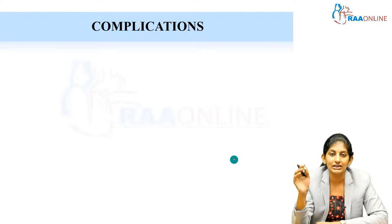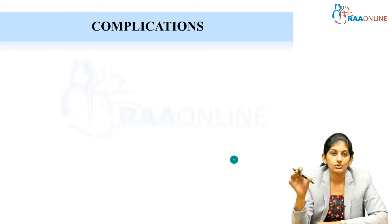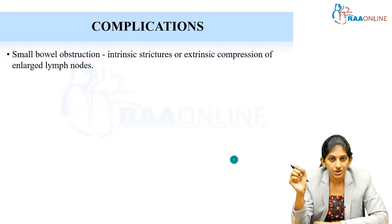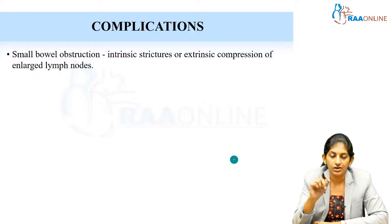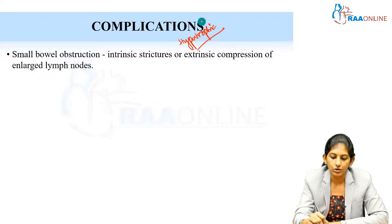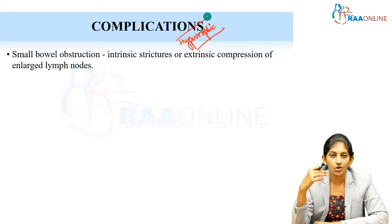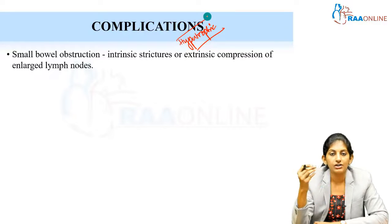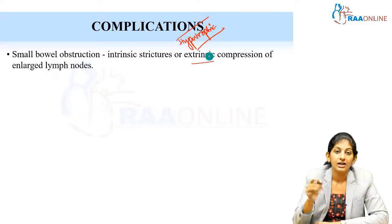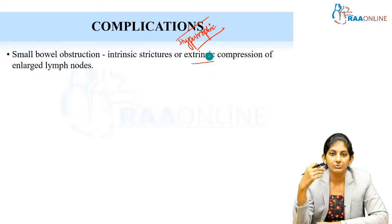Children can also present directly with intestinal obstruction or perforation. The first complication is intestinal obstruction, which can occur either because of strictures in the hypertrophic or ulcerohypertrophic form, presenting as small bowel obstruction, or because of large mesenteric, paraaortic, or omental lymph nodes compressing the bowel from outside — causing extrinsic compression and a small bowel obstruction-like condition.